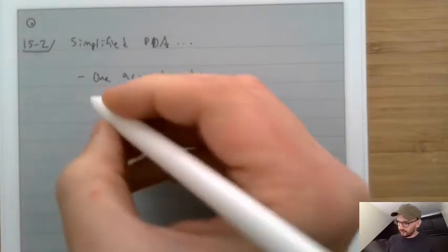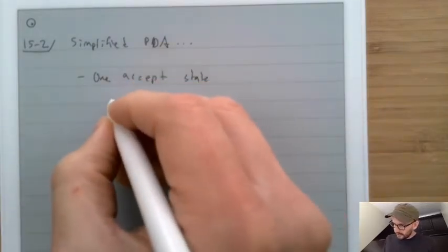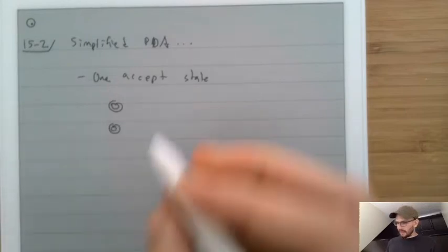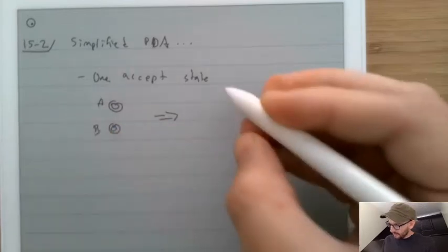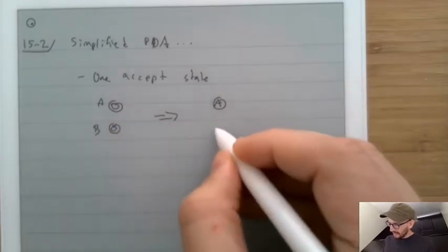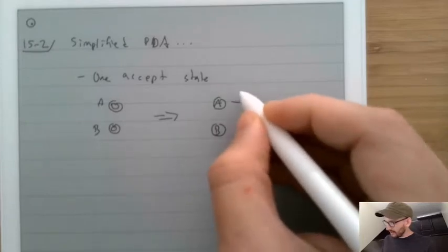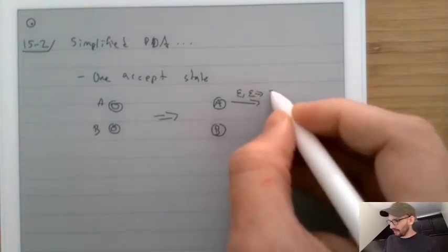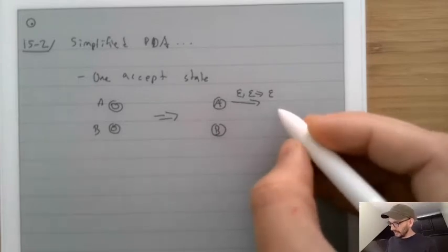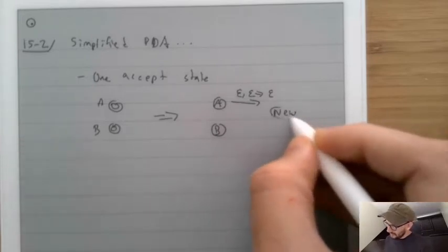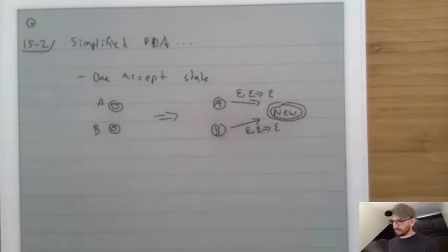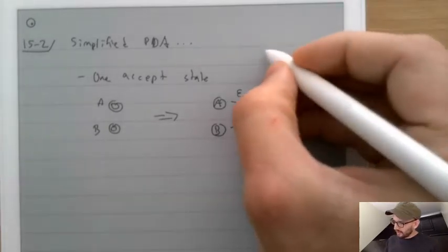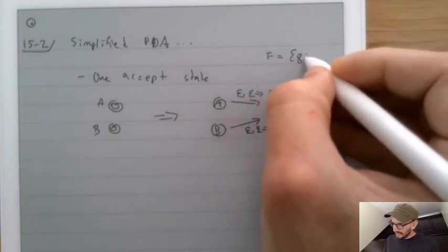To have one accept state, we'll make it so that the original machine had a bunch of accept states — let's call them A and B. We'll translate that so that state A and state B now have a transition that goes epsilon, epsilon → epsilon, to a new state that is a unique accepting state. So we'll know that F equals exactly {QF}.